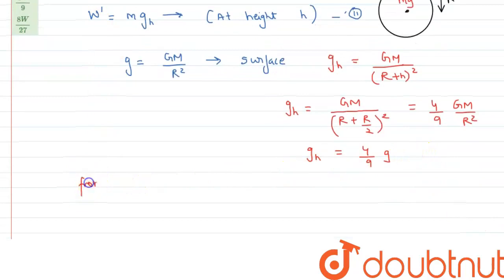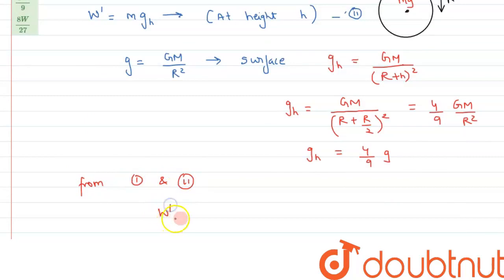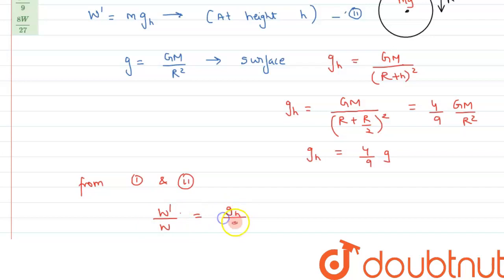From equations one and two, dividing W' by W gives W'/W = g_h/g, and since g_h/g = 4/9, we have W'/W = 4/9.